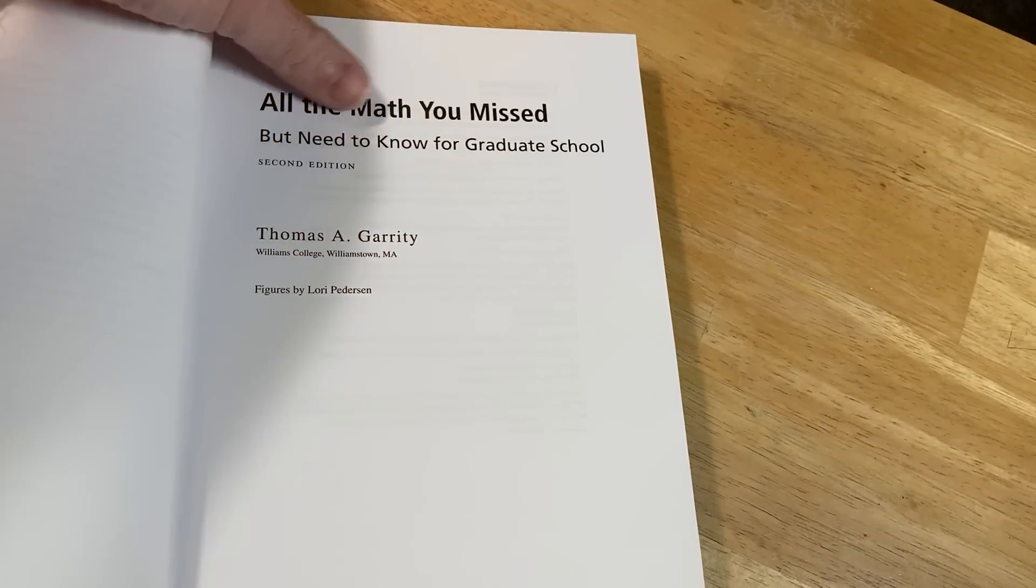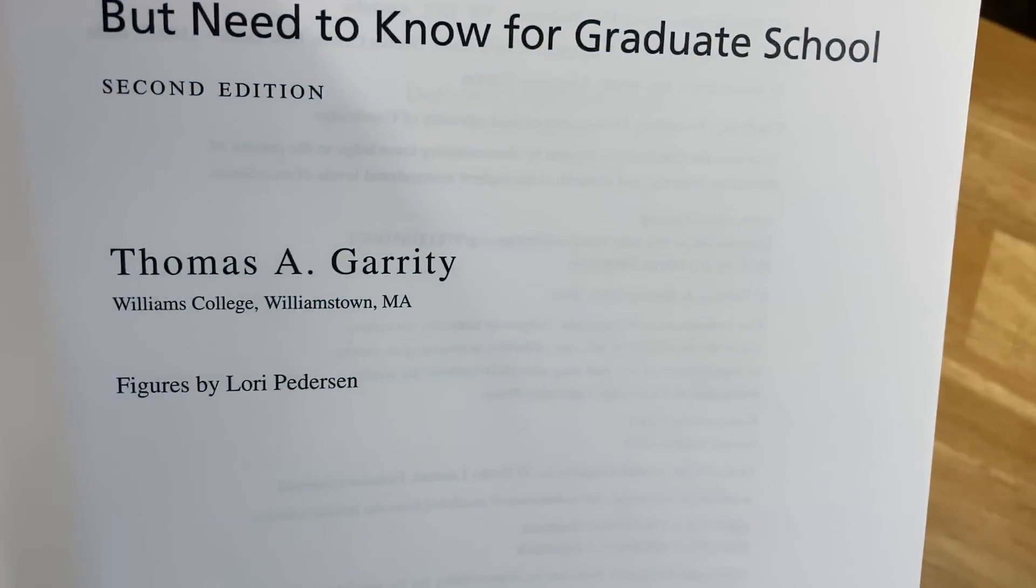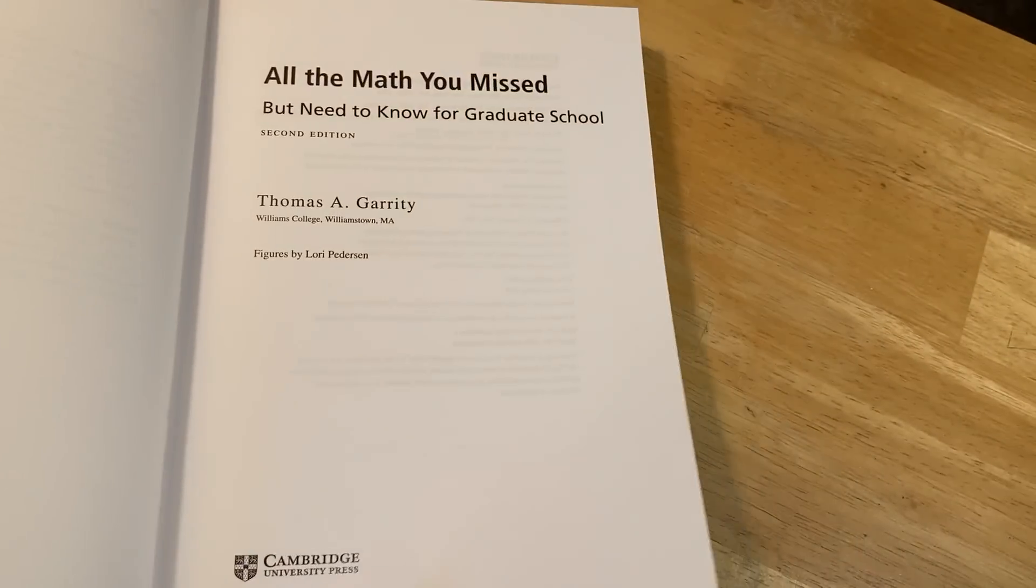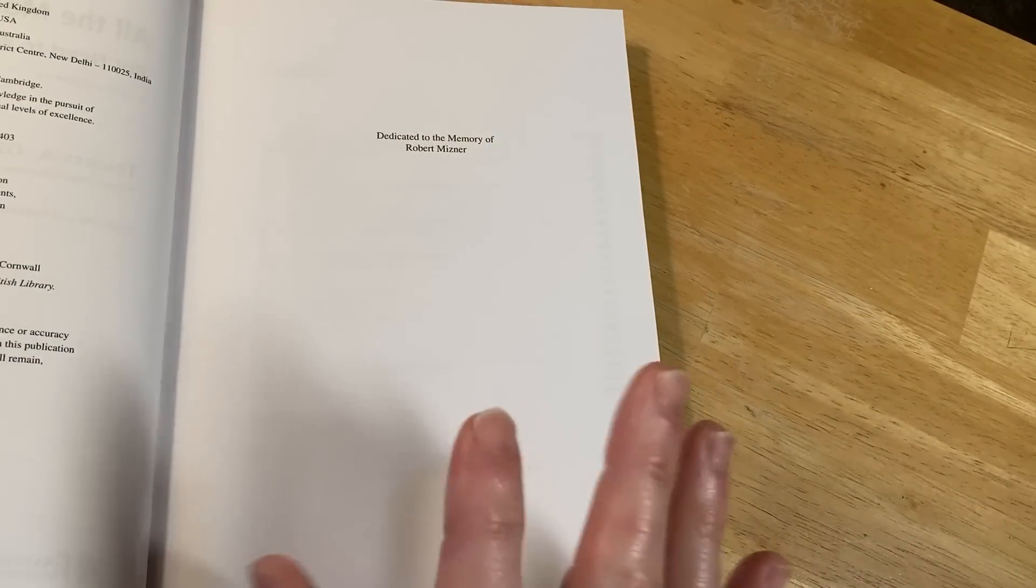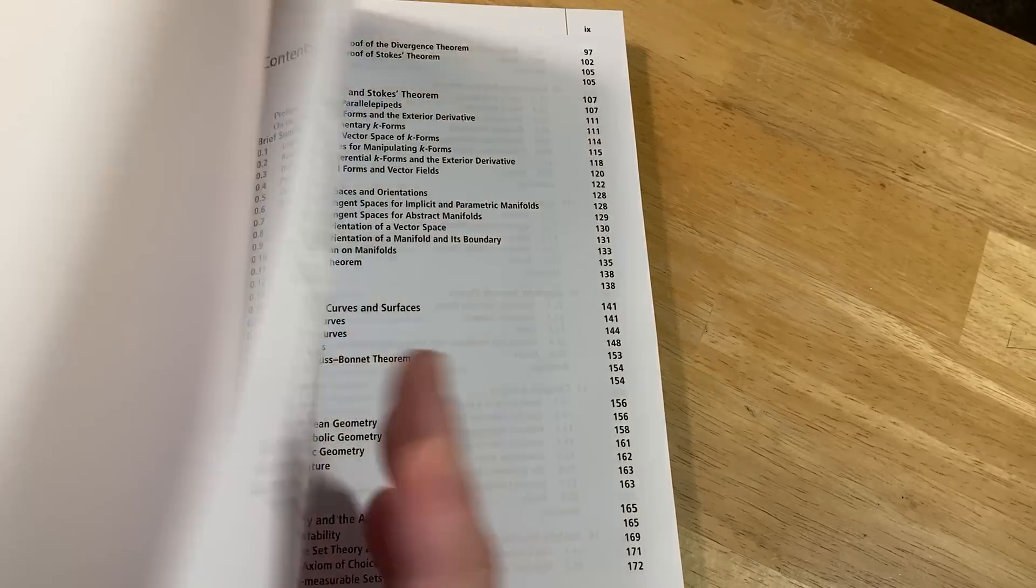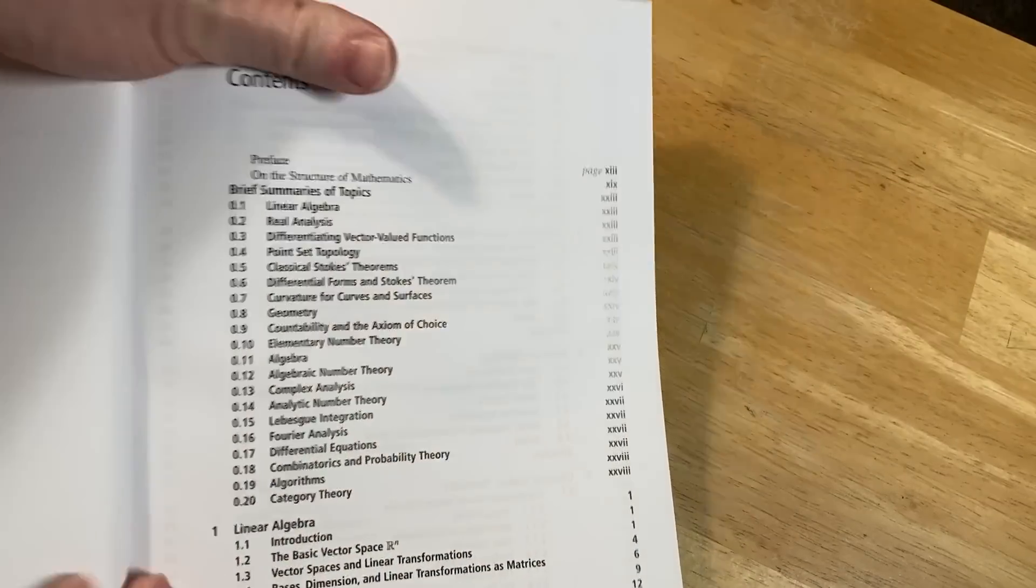Again, this is written by Thomas Garrity. I actually had the opportunity of interviewing him several years ago. He's really cool, and if you search for him on YouTube, he has videos where he talks about mathematical maturity and stuff. I think that's really cool. He's a good guy. So here are the topics.